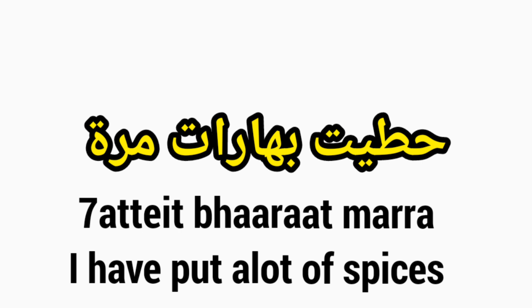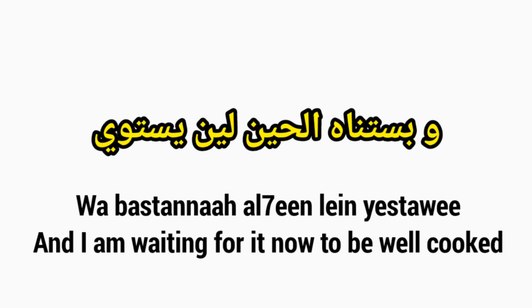Let's go to the next sentence. This sentence means 'I am waiting'. Bastanna means 'I am waiting' in the present continuous. Bastanna-h means 'I am waiting him' or 'I am waiting it' for a masculine object. And bastanna means 'I am waiting it' for a female object. So bastanna is 'I am waiting him' or 'I am waiting it' for a male object.